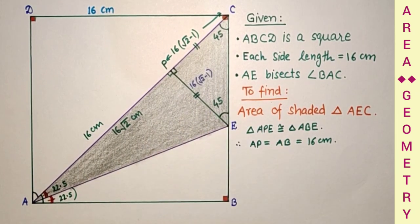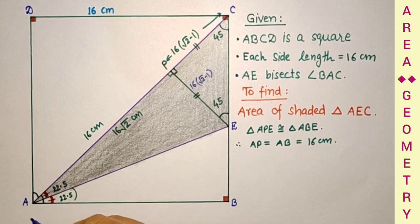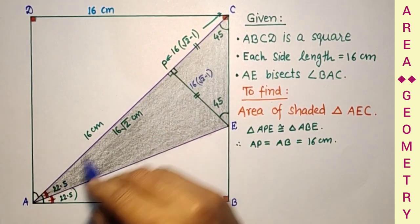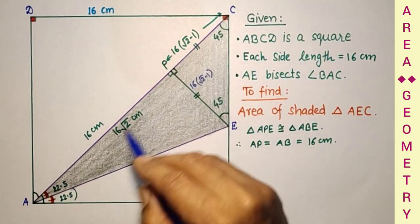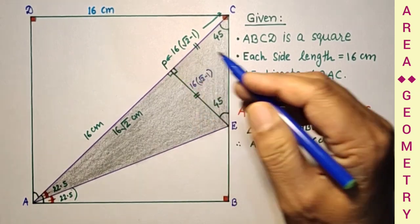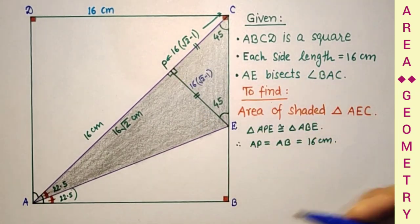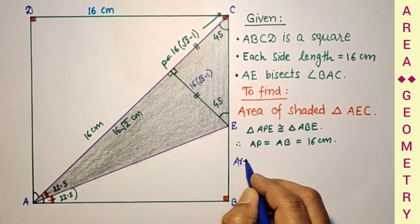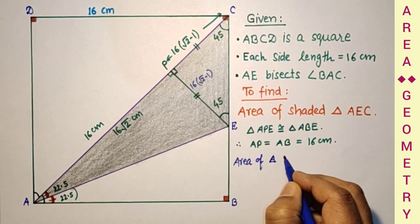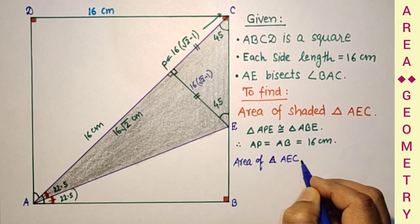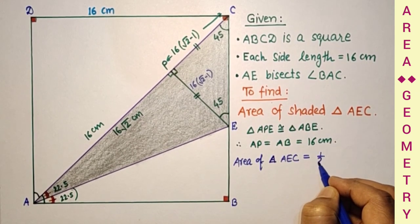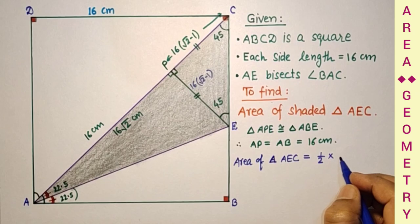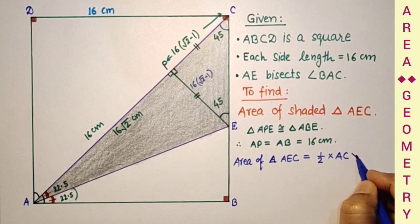Now area of this triangle will be equal to half into base into height. And this base AC is 16 root 2 cm. So required area, area of shaded triangle AEC, is equal to half into base AC into height EP.